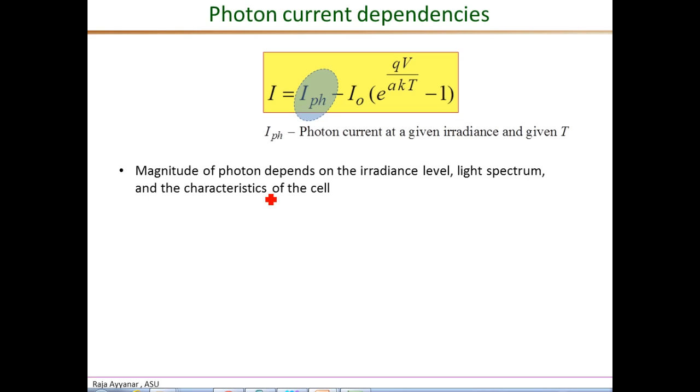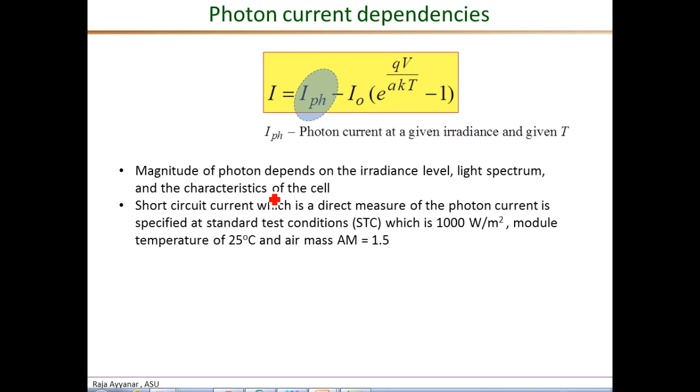The photon current is normally indicated as a measure of the short circuit current, which is specified in the data sheets of all PV panels. But these are specified at standard test conditions (STC), and that is an irradiance level of 1000 watts per square meter, at a module temperature of 25 degrees Celsius, and a factor called air mass AM of 1.5. In a later video, we look at what this air mass means.